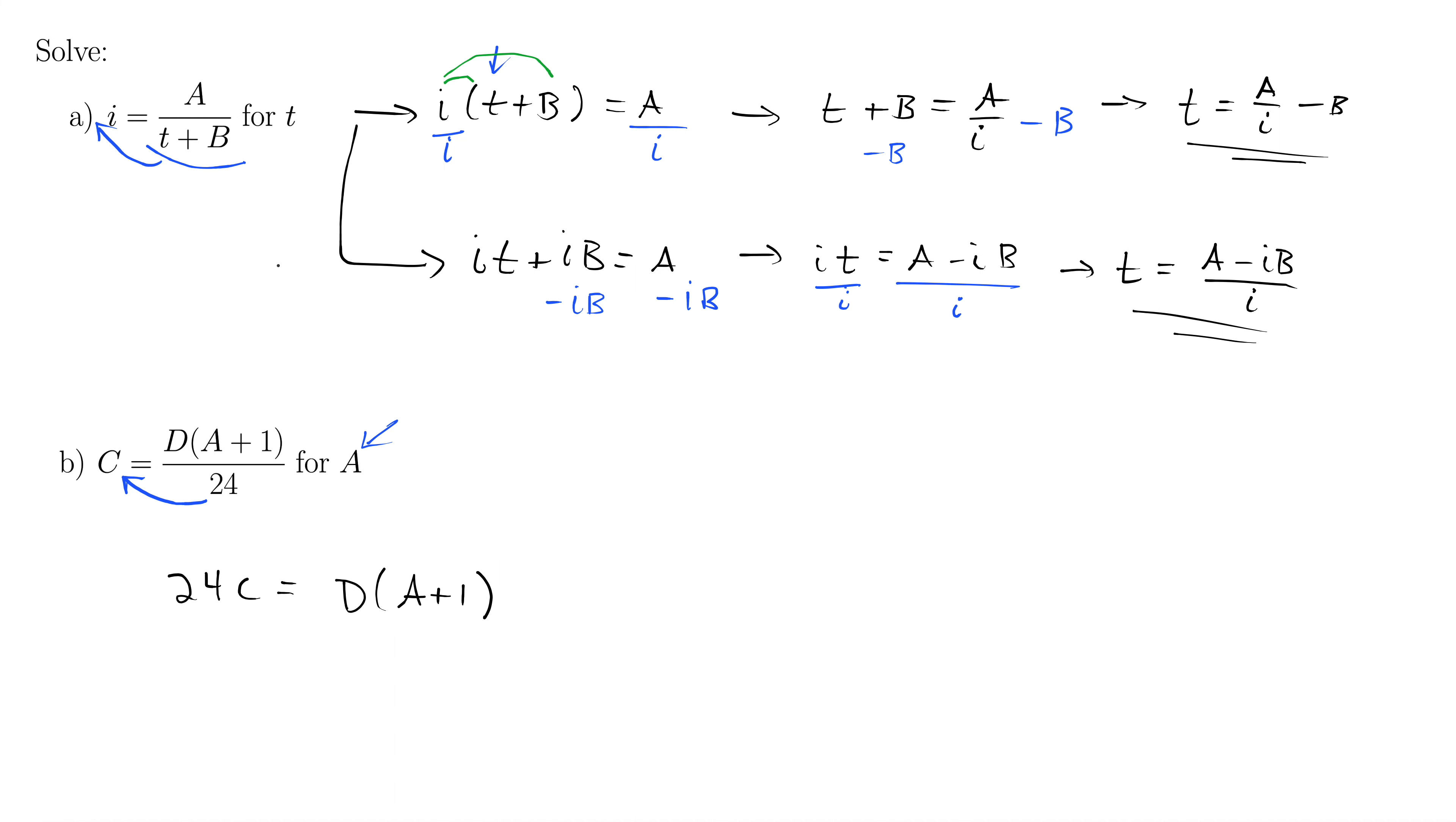And again, I'll show you two ways to solve this. We're trying to get to the A there. So one thing we could do is divide by D right here, right off the bat. What would that get for us? Well, that would give us 24C over D equals A plus 1. And then simply subtract 1 to get A isolated. Minus 1, minus 1. And that gives us a final answer for A. A equals 24C over D minus 1. Perfectly fine answer.